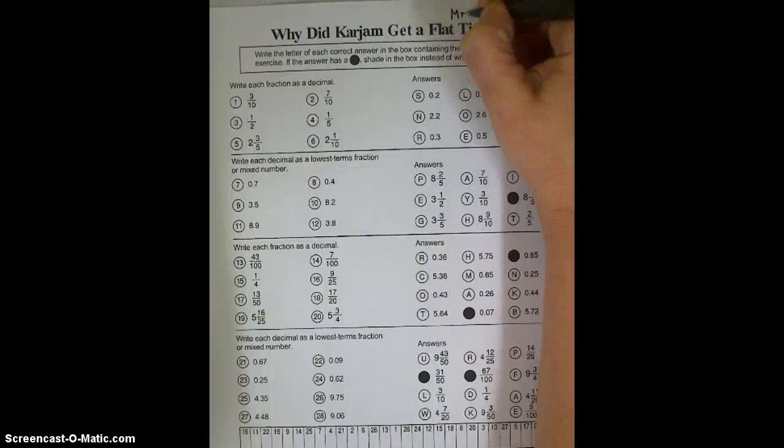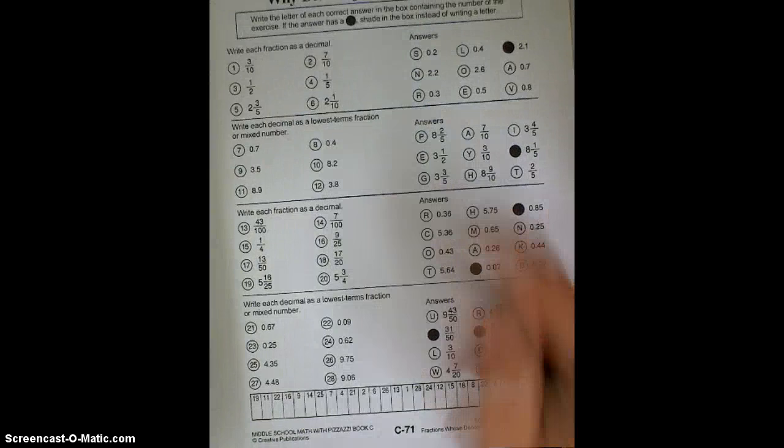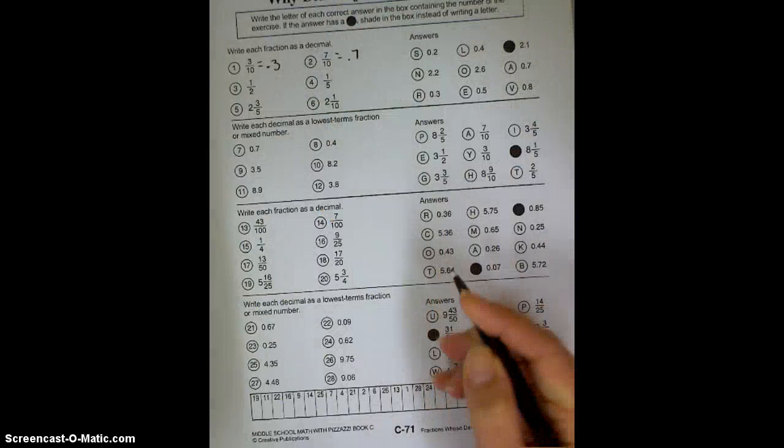Get your name on it, and then up here it says write each fraction as a decimal. 3 tenths can be written as .3, 7 tenths can be written as .7. 1 half, we've practiced quite a bit, is .5.